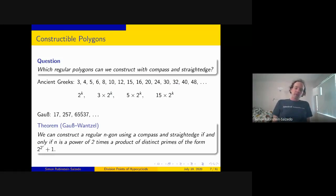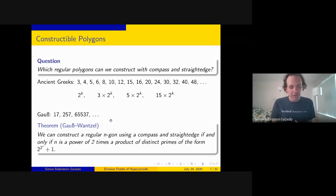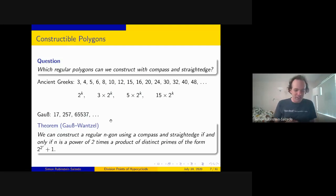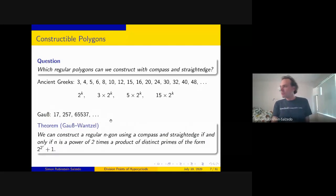There probably aren't any more Fermat primes, but we don't know. We've checked values of r up to 24 or so, and there are no more primes up to that size, but they get big very quickly. This theorem is proved using Galois theory, an important part of abstract algebra and standard part of the undergraduate mathematics curriculum. I actually taught it in my abstract algebra class to high school students in the spring.